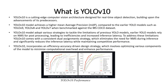YOLO V10 achieves a higher mean average precision compared to earlier YOLO models such as YOLO V9, YOLO V8, and YOLO V7 when benchmarked against the MS-COCO dataset. Looking at the graph, the x-axis shows latency and the y-axis shows average precision. You can see this red line representing YOLO V10, which outperforms all previous YOLO models in terms of both accuracy and latency.